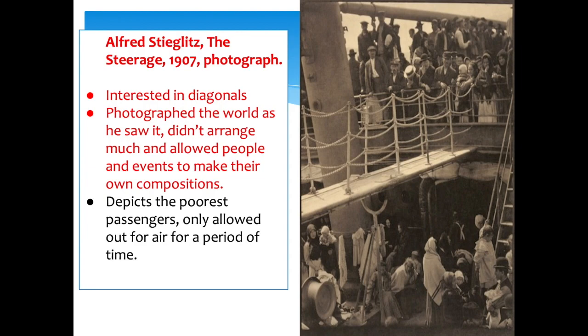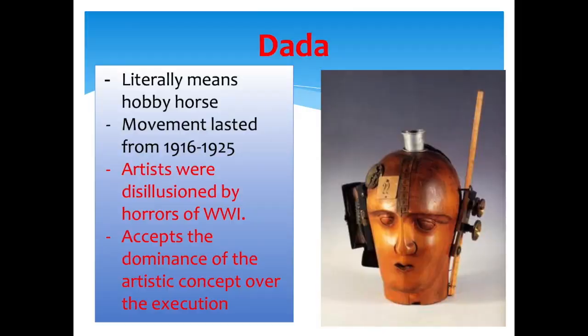Photography has been around for about 80 years by this point. Alfred Stieglitz's The Steerage from 1907 is known for its diagonals and his approach of never posing his subjects, showing the influence of Cubism. He depicted the world as he saw it, allowing people to make their own depictions. Here he captures the poorest passengers on a ship — immigrants only allowed above deck for short periods — showing the plight of people coming from Europe to America.